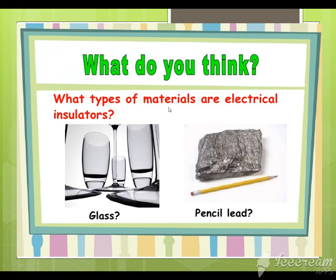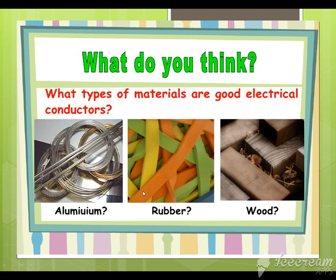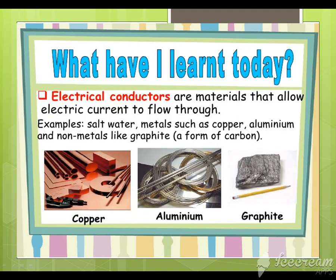What type of material is an electrical insulator — glass or pencil? What types of material are good electrical conductors? Aluminum is a good conductor, but rubber and wood are insulators.